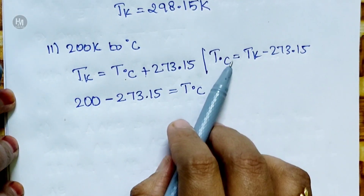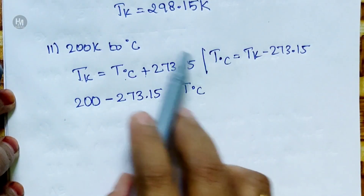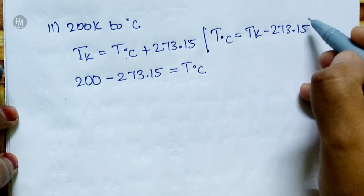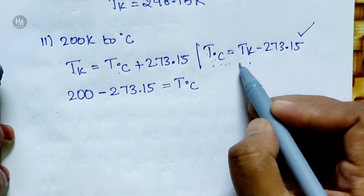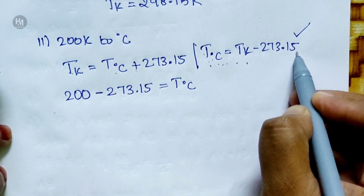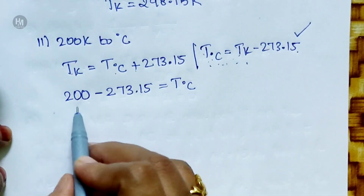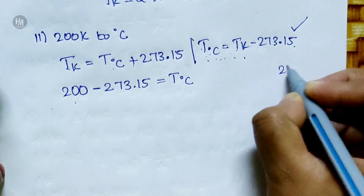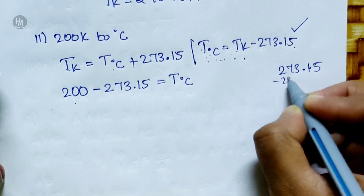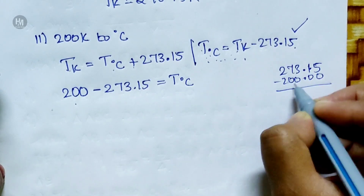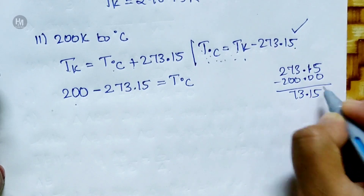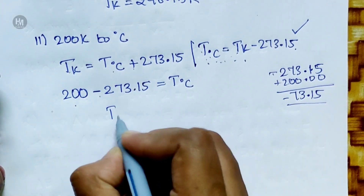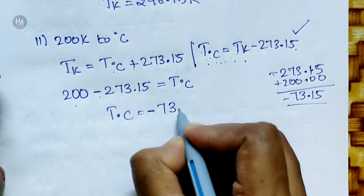Now we will learn the second formula. TC is equal to TK minus 273.15. We substitute TK equal to 200: 200.00 minus 273.15. Since we have minus, the answer is minus. So TC is equal to minus 73.15 degrees Celsius.